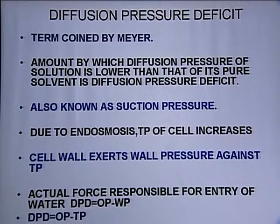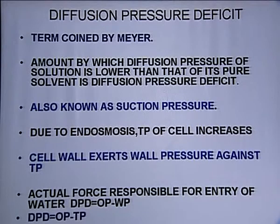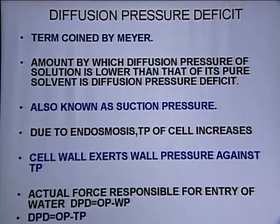Where their concentration is high, they diffuse towards the area where their concentration is less. Before discussing diffusion pressure deficit, let's first understand what diffusion pressure is. What is diffusion pressure? It is the pressure exerted by the tendency of particles to diffuse from an area of higher concentration to the area of lower concentration.